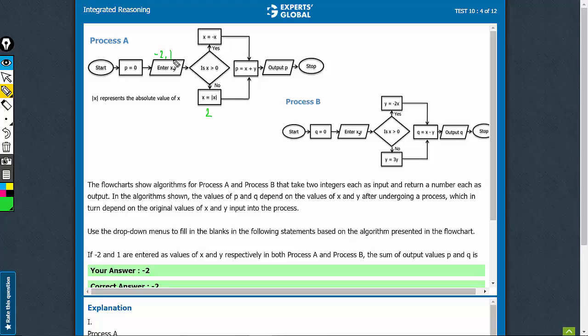p is equal to x plus y. y is 1. So, p becomes 3. The output value p is 3.